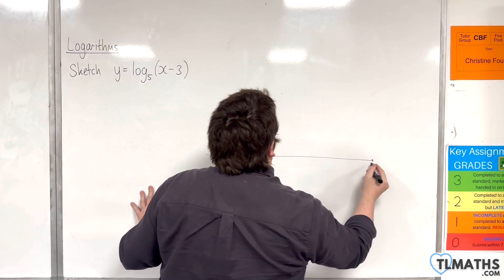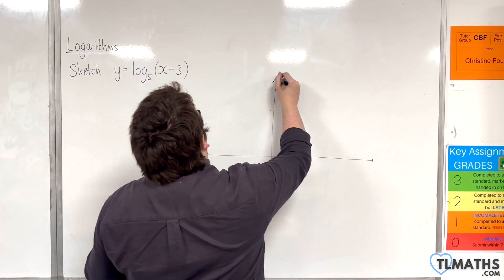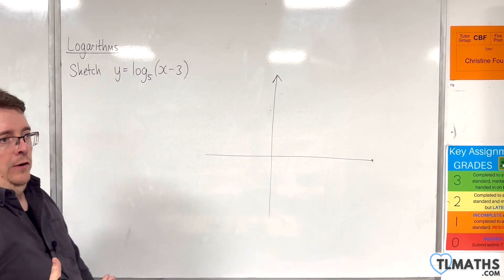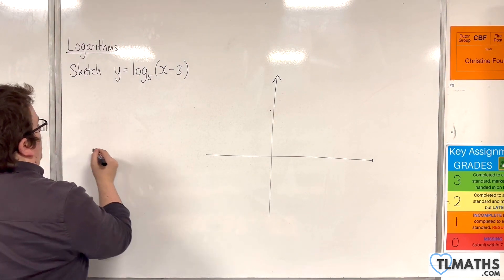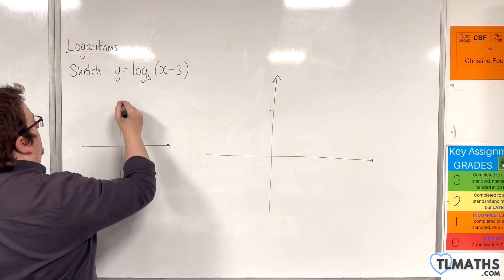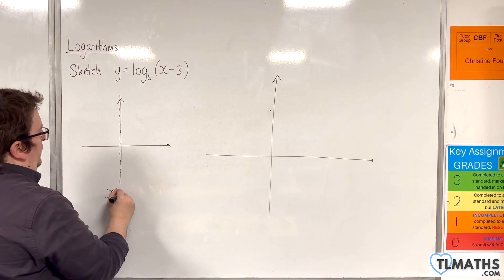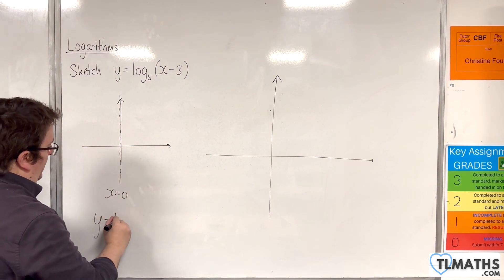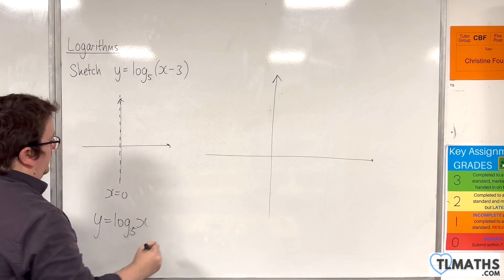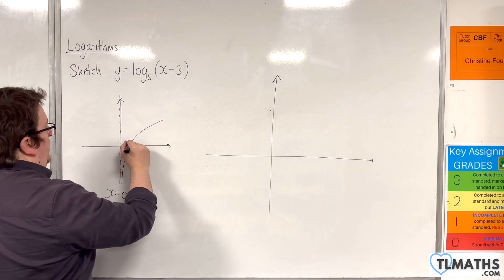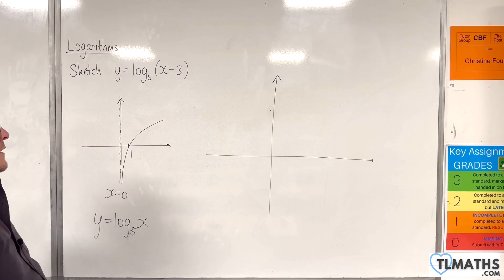So we know what log base 5 of x looks like. Log base 5 of x would have a vertical asymptote at x equals 0. So this is y equals log base 5 of x, and then it would look like this and it's going to go through 1 on the x-axis.